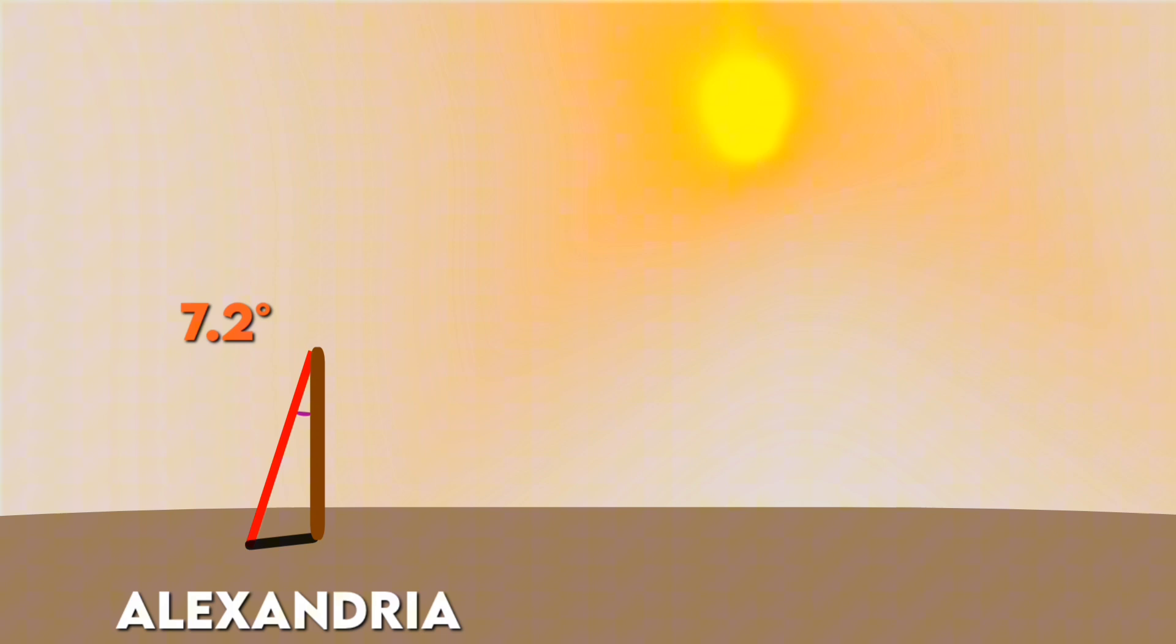To test this, he placed a stick in the ground in Alexandria and was surprised to find that it cast a shadow at an angle of 7.2 degrees. He then reasoned, since the sun is far from the Earth, if the Earth were flat, its rays should hit both cities at the same angle.